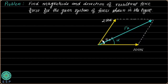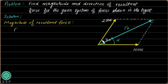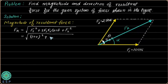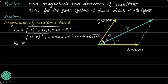Using the expression FR = √(F1² + 2·F1·F2·cos θ + F2²), with F1 = 100 N, F2 = 250 N, and θ = 50°: FR = √(100² + 2×100×250×cos 50° + 250²). Solving this, we get FR = 275.16 Newton.